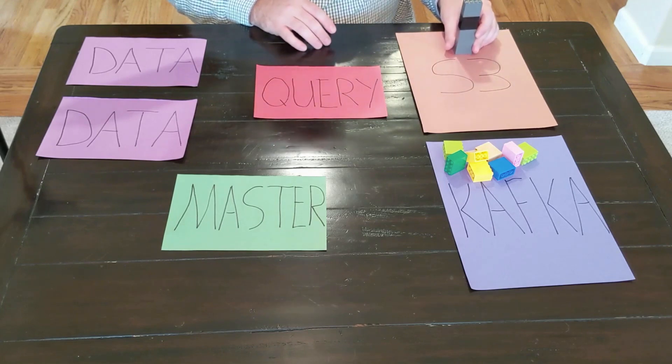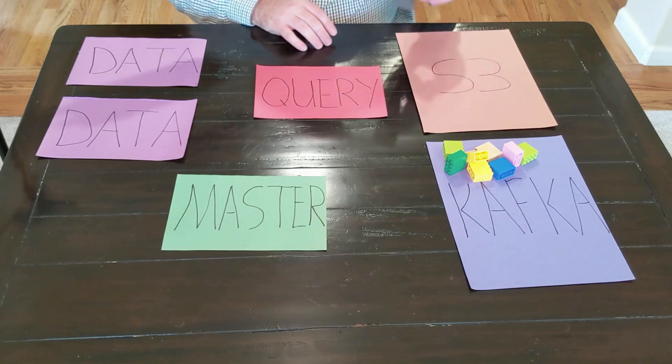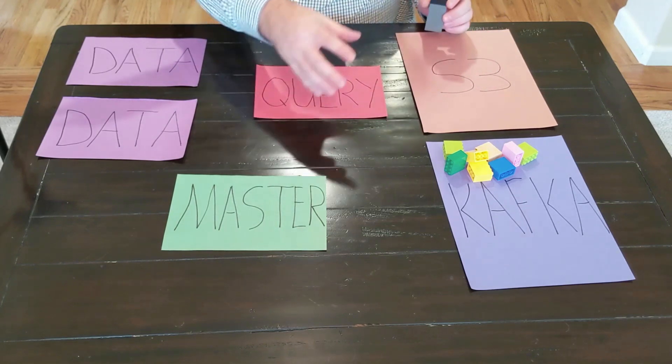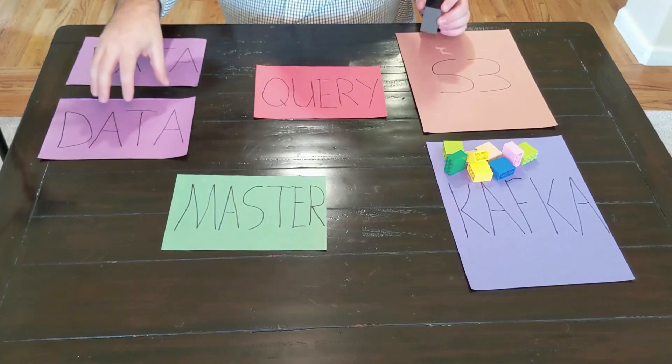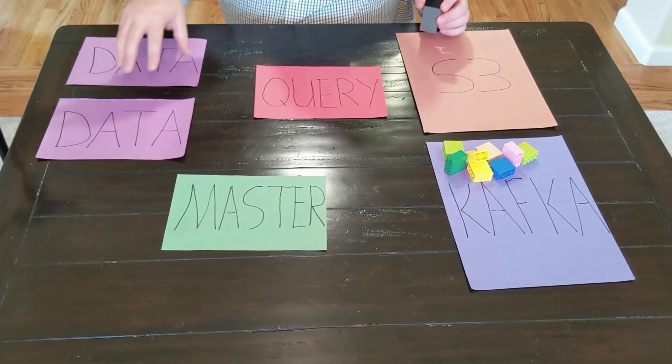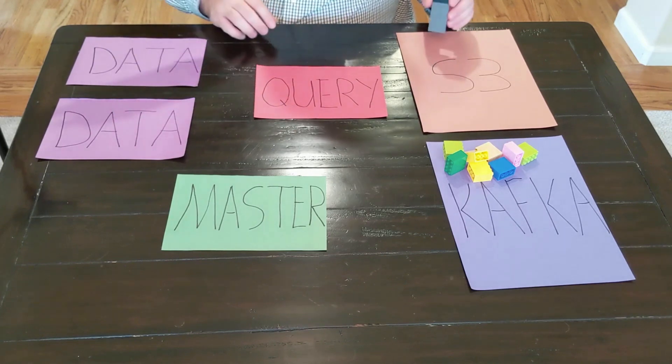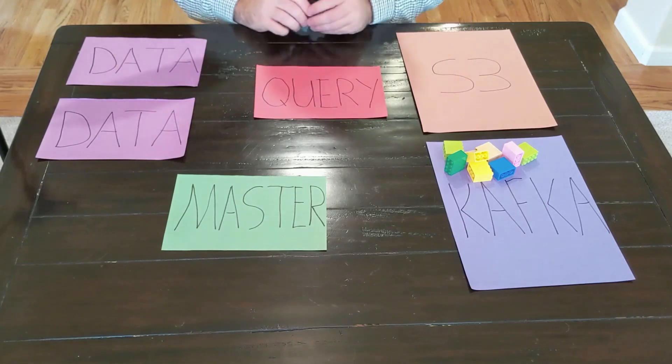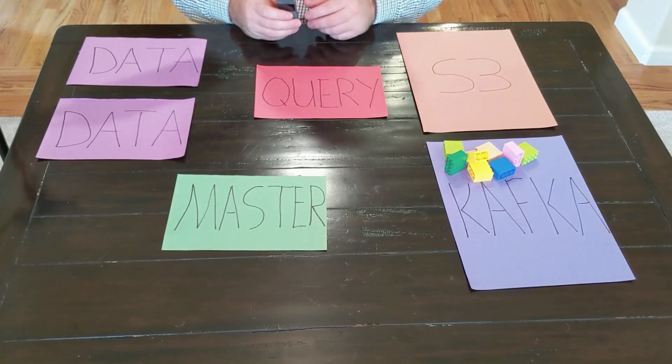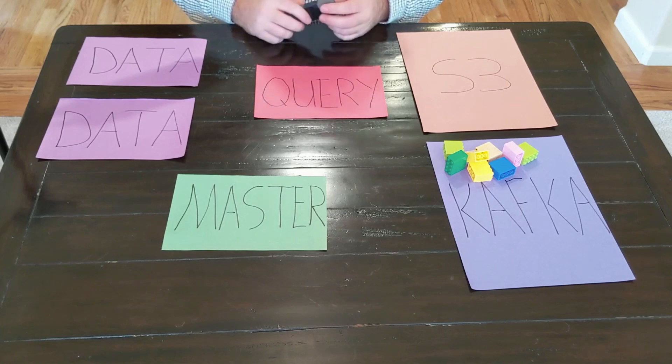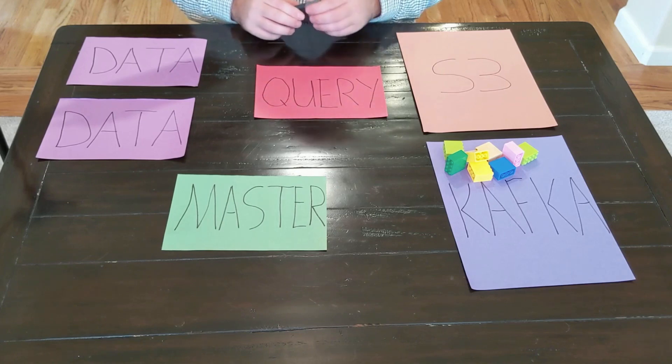So what we'll do is we will do a batch ingest of that data. That batch ingest will start a task on one of these data nodes, these data servers, and say, there's a file here. I want you to read that and I want you to put it into Druid's file format. Well, there's several different parts of what Druid's file format is, and one of those things is creating segments.